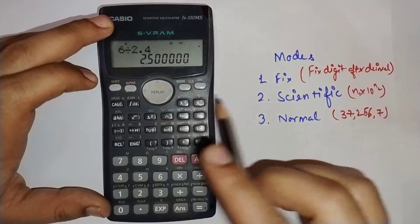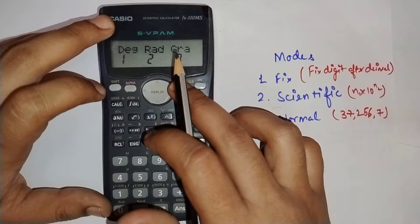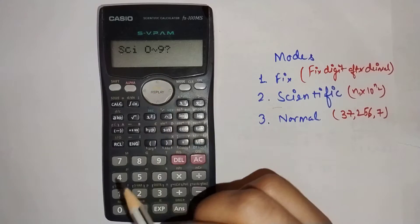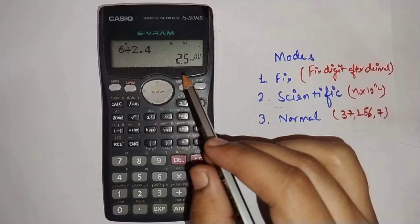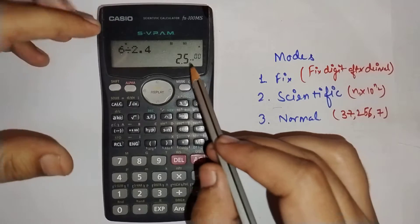For scientific mode, press mode, mode, then 2. It's asking for the number of significant figures. If I choose 2, it gives me two significant digits, like 2.5 times 10 to a power.